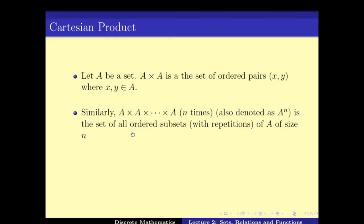When you take the Cartesian product of A with itself n times, we denote it as A^n. So A Cartesian A can be written as A squared. If you unfold the definitions, A^n is the set of strings of elements of A of length n — in other words, the ordered subsets with repetition of A of size n.